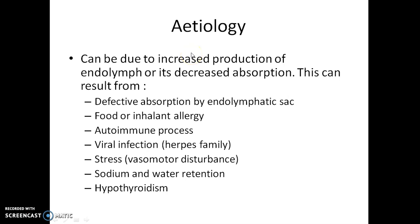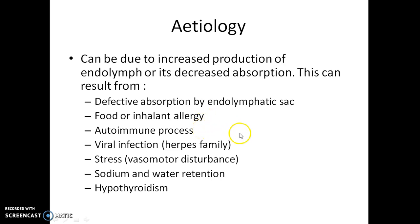The etiology of Ménière's disease includes increased production or decreased absorption of endolymph. This can result from defective absorption due to a defect in the endolymphatic sac, endolymphatic allergy, autoimmune processes, viral infection especially the herpes group of viruses, stress, sodium and water retention, and hypothyroidism.